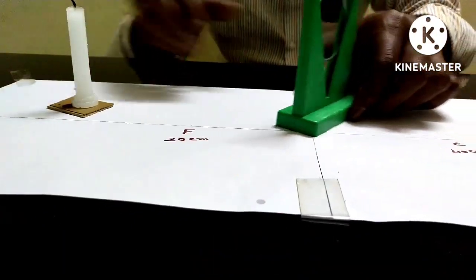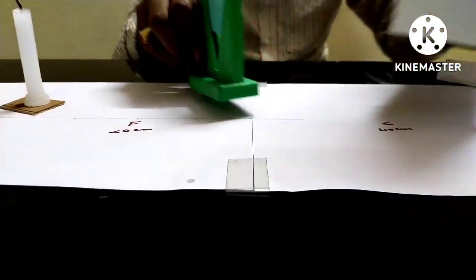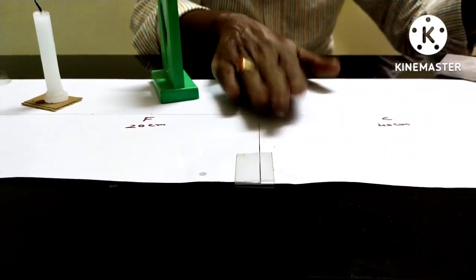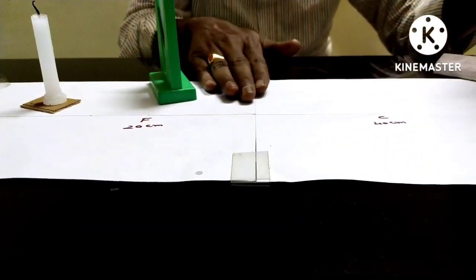A candle. It is an object. It is a screen. Join these two A4 sheets with a tape.